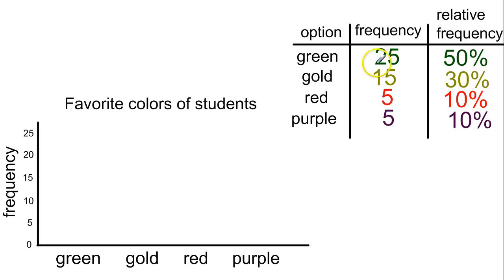So our green option of 25, we're going to draw a bar going all the way up to the 25 and back down, right over the green. You're going to leave a space. You're going to do the same thing for gold - go up to 15. Hopefully you draw a little straighter than I do with my mouse. Your red, you've got 5. And then purple, you've got 5. Same idea.